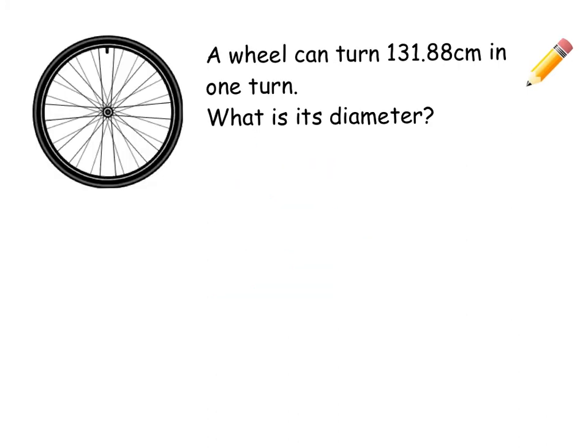Then we've got a wheel. A wheel can turn 131.88 centimeters in one turn. Now imagine that. See this bit where you pump up the air in your tire? If that was my starting point, in one turn of that wheel from start to finish, it's saying it can do 131.88. So it's telling you the circumference of the wheel. The distance that that wheel moves along the pavement in one full turn is your circumference, but it's just laid out flat like that along the ground.